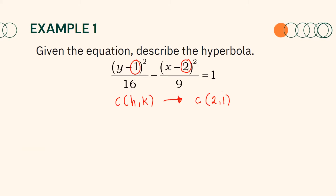The denominator of the positive squared term will be a² and the negative term's denominator will be b². Hence, in this equation, a² = 16 and b² = 9. Since a² is the denominator of y², then the orientation of the hyperbola is vertical.